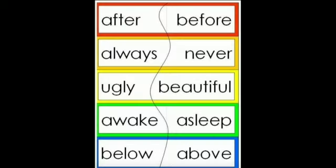Now we will see some more examples of antonyms. After — before. Always — never. Ugly — beautiful. Awake — asleep. Below — above. These are some more examples of antonyms — words that are opposite to each other. The words that are opposite to each other are called antonyms.